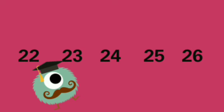Ascending order is also called increasing order. These numbers have been arranged from the smallest to the biggest: 22, 23, 24, 25, 26.